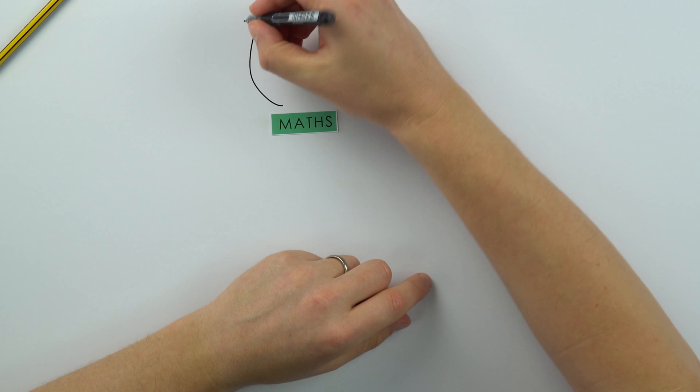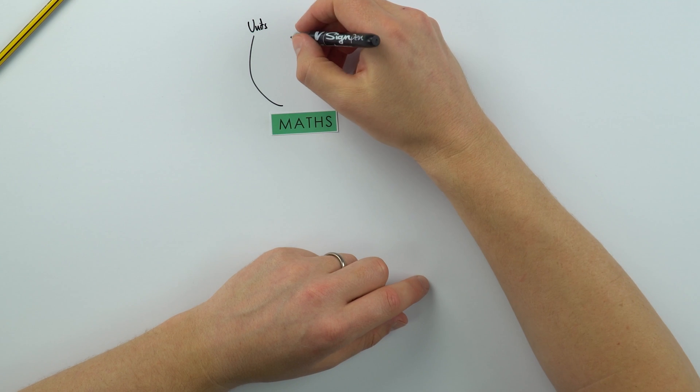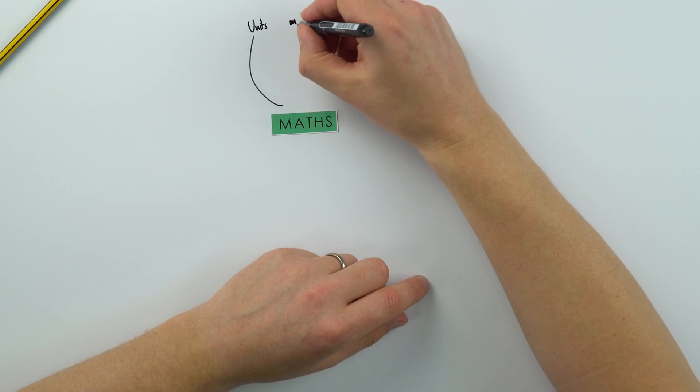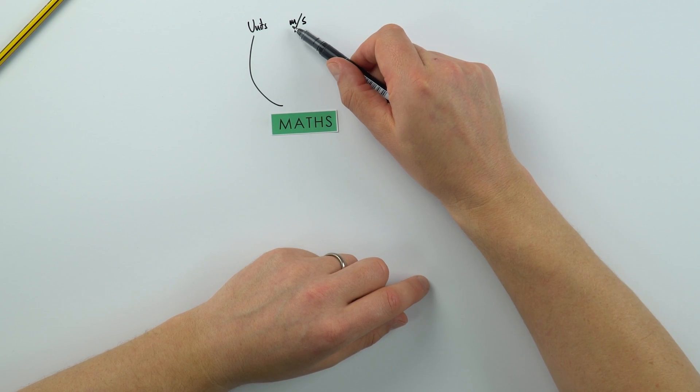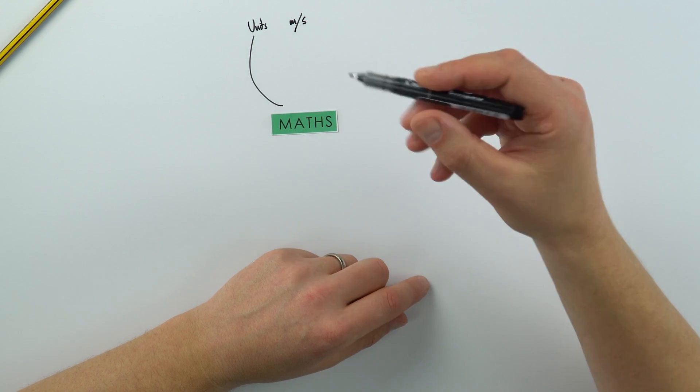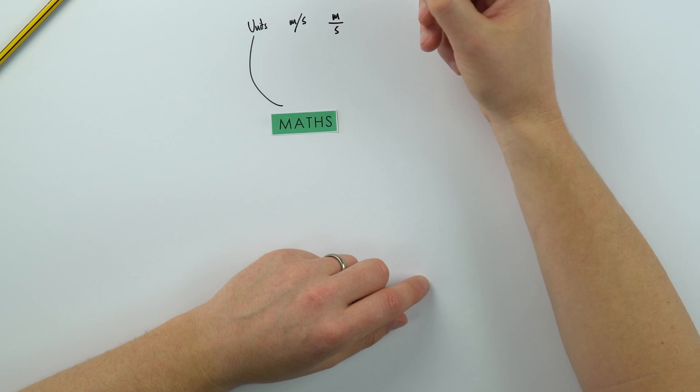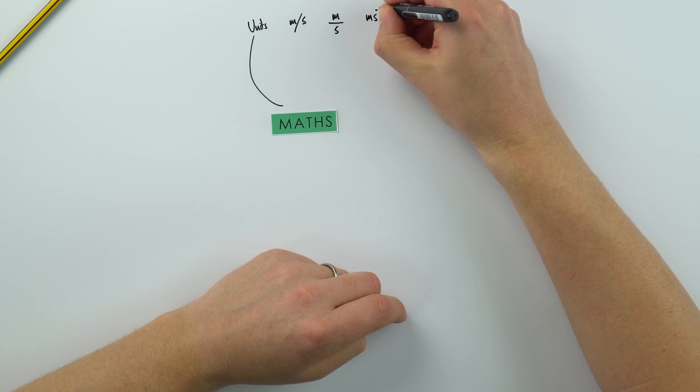Probably one of the biggest differences is the way that we show units. Now at GCSE, in terms of units, we might have showed maybe something with a speed or a velocity has the units of metres slash seconds. That means the amount of metres covered per second. And we can also think about this as metres over seconds. And the way that we represent this when it comes to A-level is metre second to the minus one.